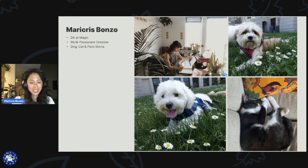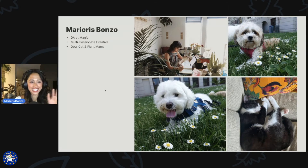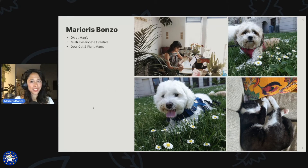Fun facts about me: I have two dogs and one cat, and about 30 indoor plants. I'm estimating 30 because I need to count them again — a few of my plants died. But it's okay. So these are my pets: this is Kona, Reggie, and Pito.